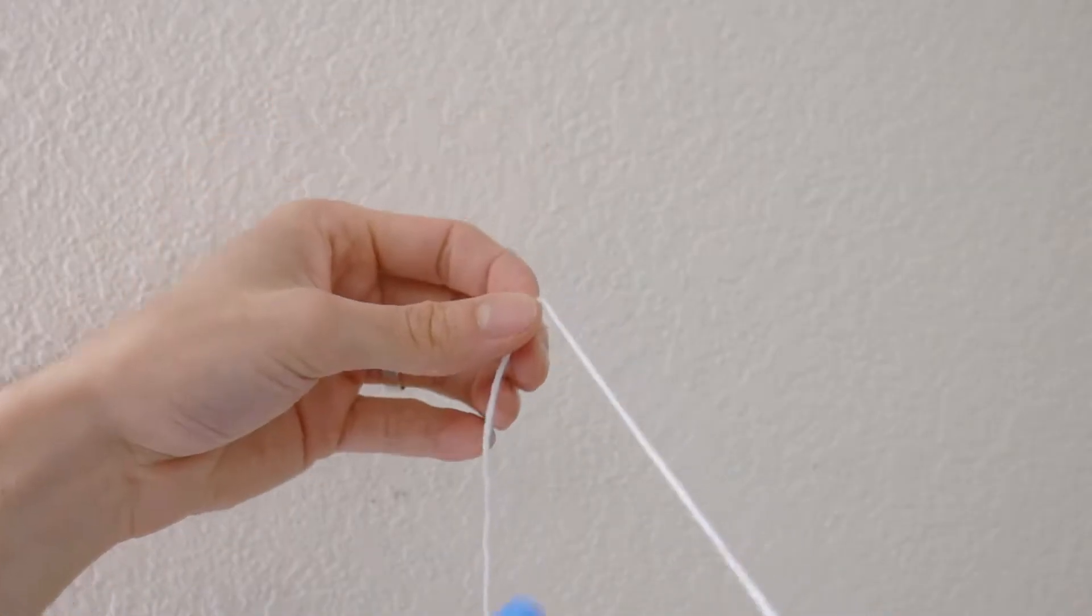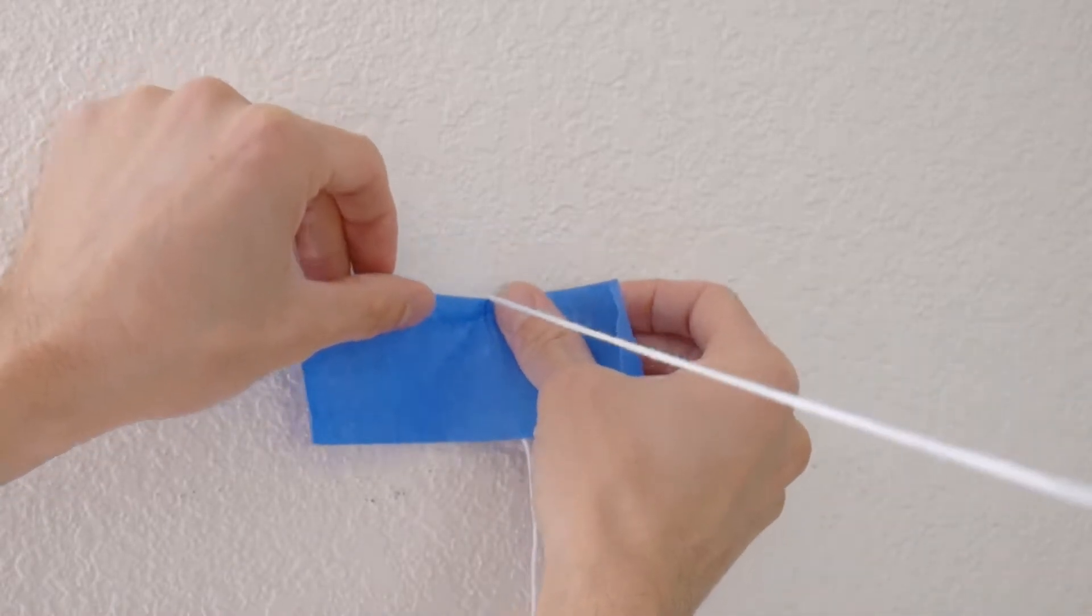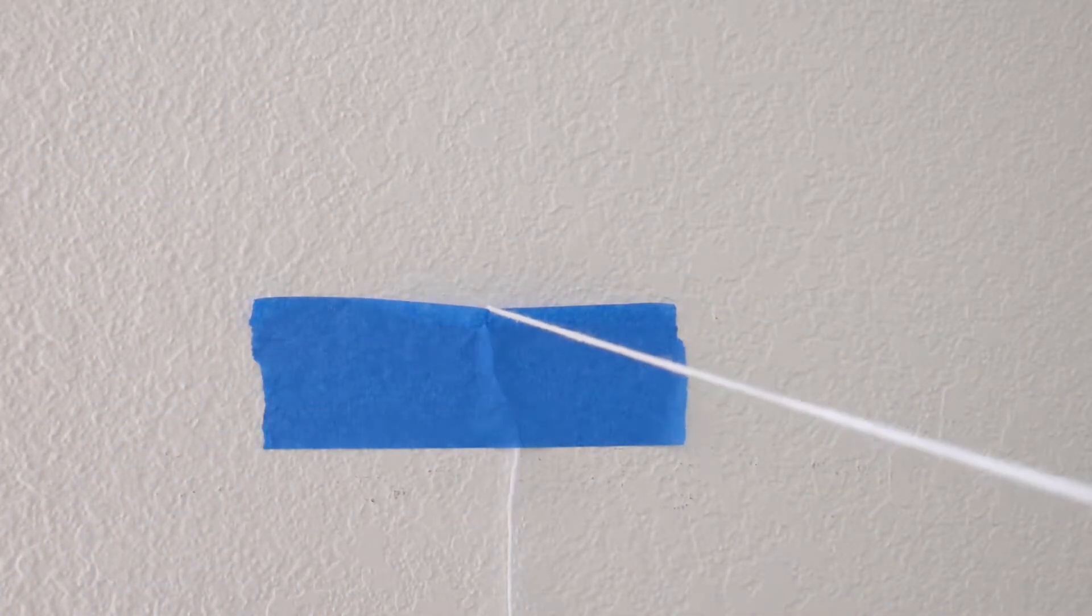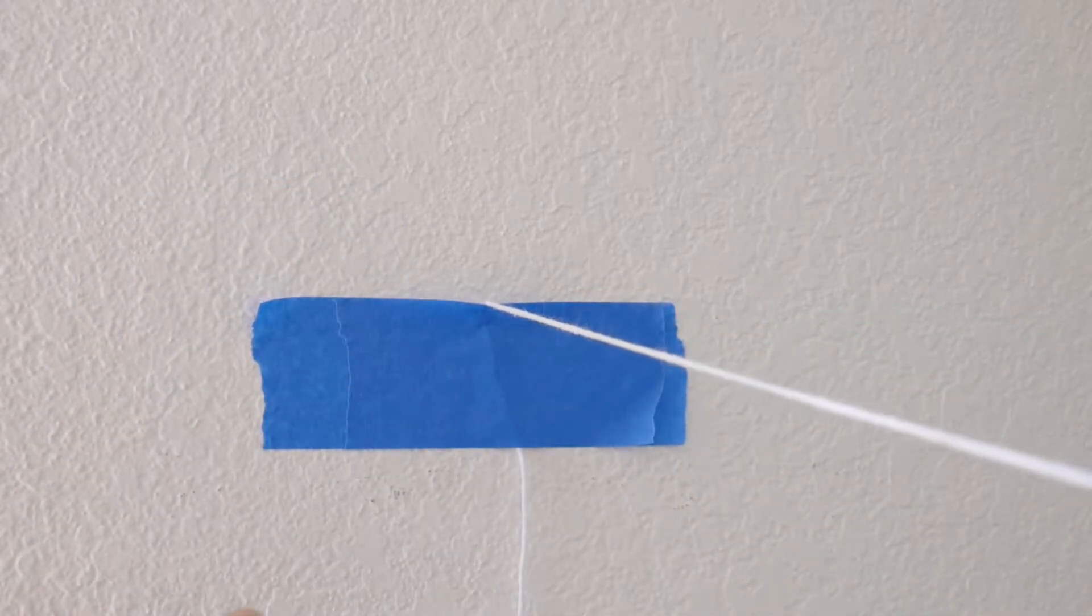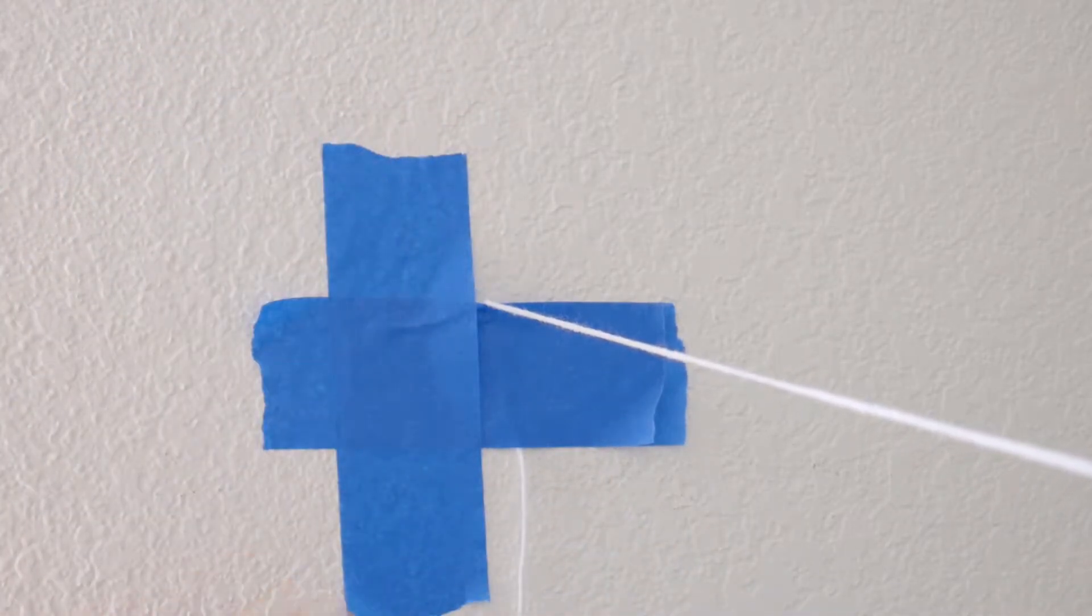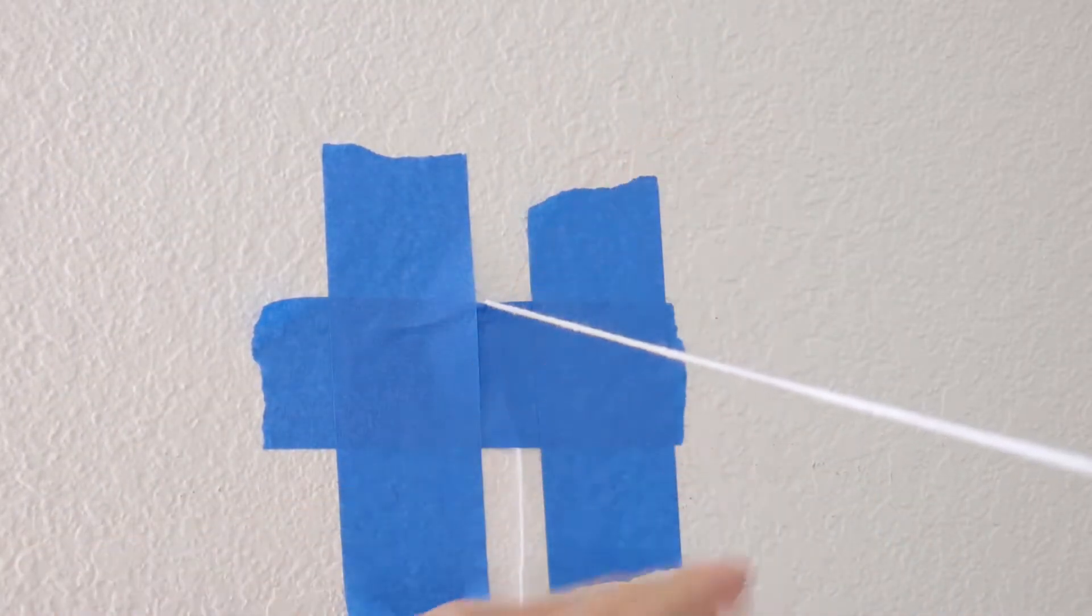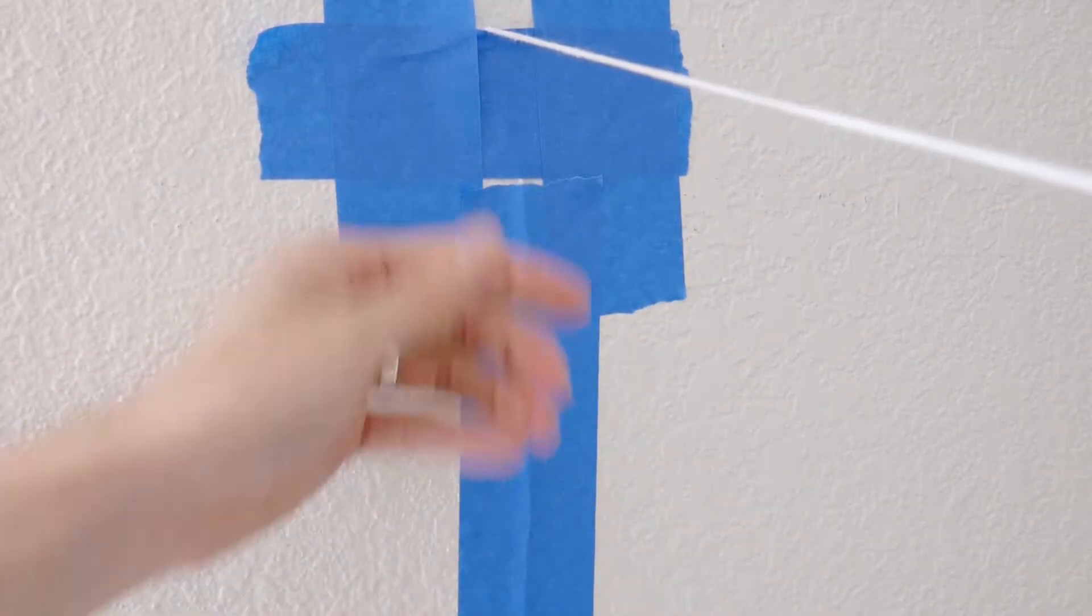Or tape the string to the wall using some special taping techniques. First tape the string onto the wall just like this and put a second layer of tape over the string so it doesn't rip through. Then put two more pieces of tape one on each side just like this to stop those first pieces from peeling away. Then finally apply one more piece of tape on the remainder of the string so that it doesn't pull through.